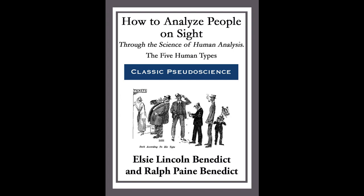Dedicated to our students. Contents — Human Analysis. Chapter One: The Alimentive Type — The Enjoyer. Chapter Two: The Thoracic Type — The Thriller. Chapter Three: The Muscular Type — The Worker. Chapter Four: The Osseous Type — The Stayer. Chapter Five: The Cerebral Type — The Thinker. Chapter Six: Types That Should and Should Not Marry Each Other. Chapter Seven: Vocations for Each Type.